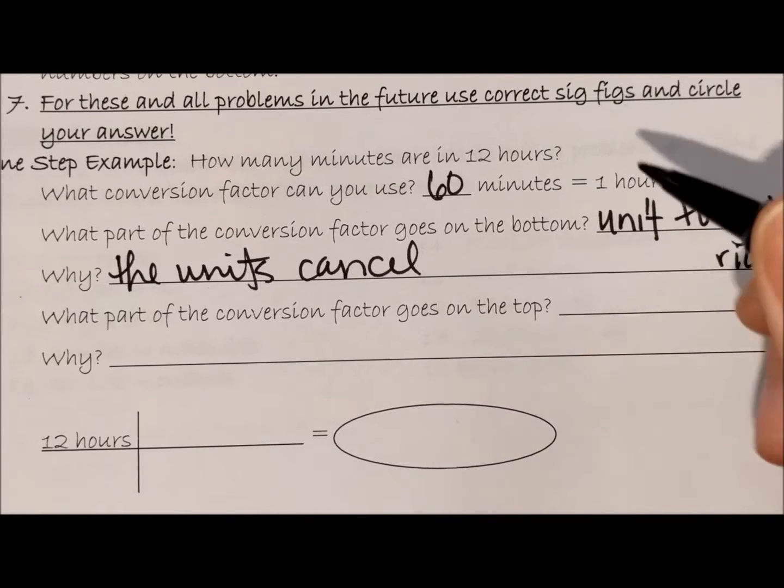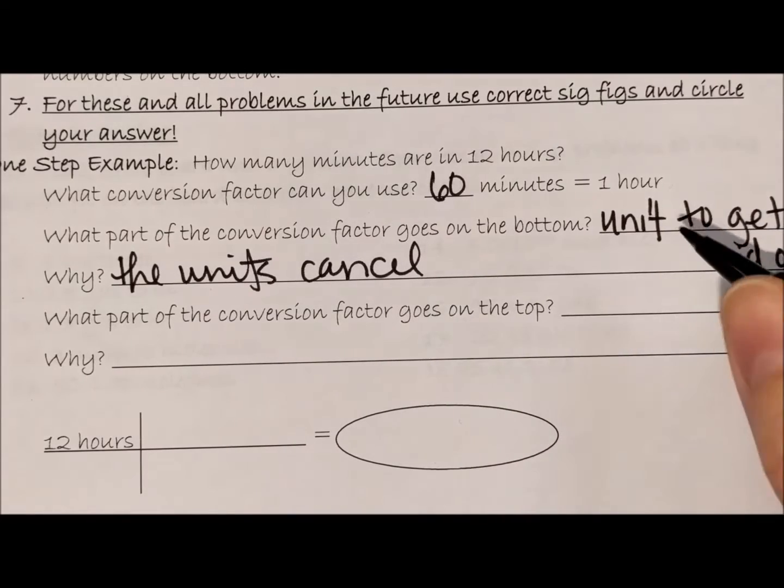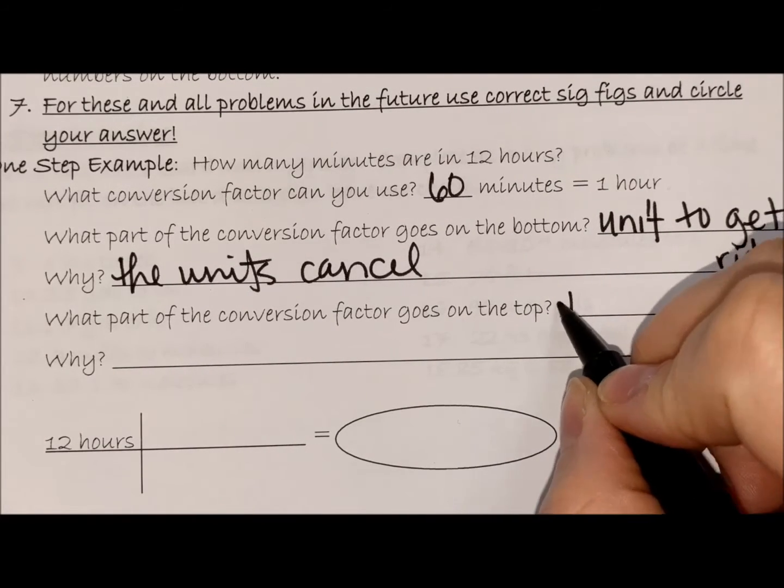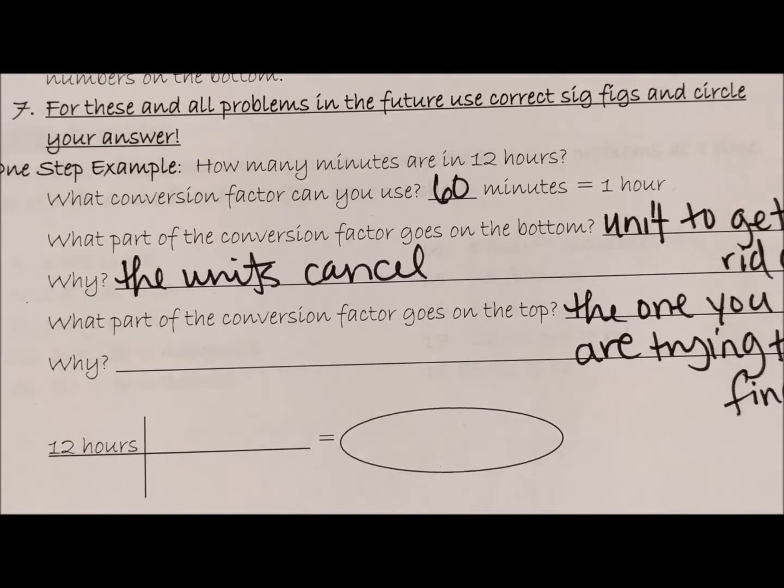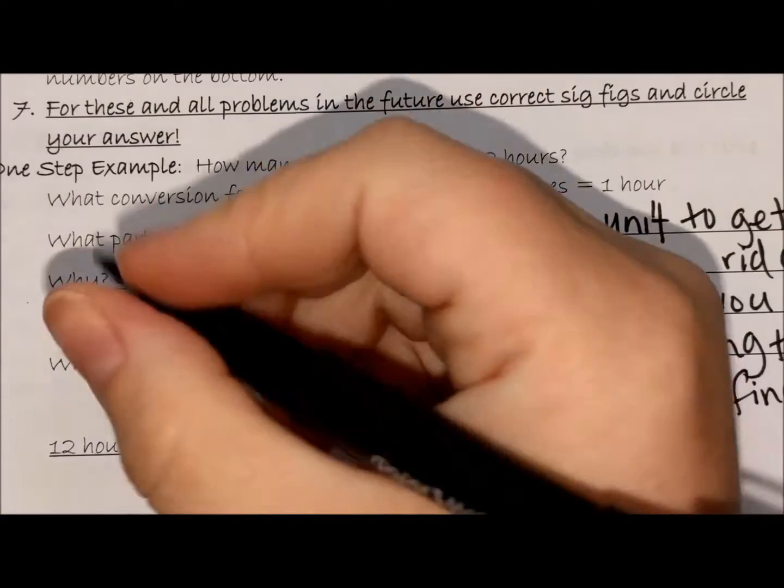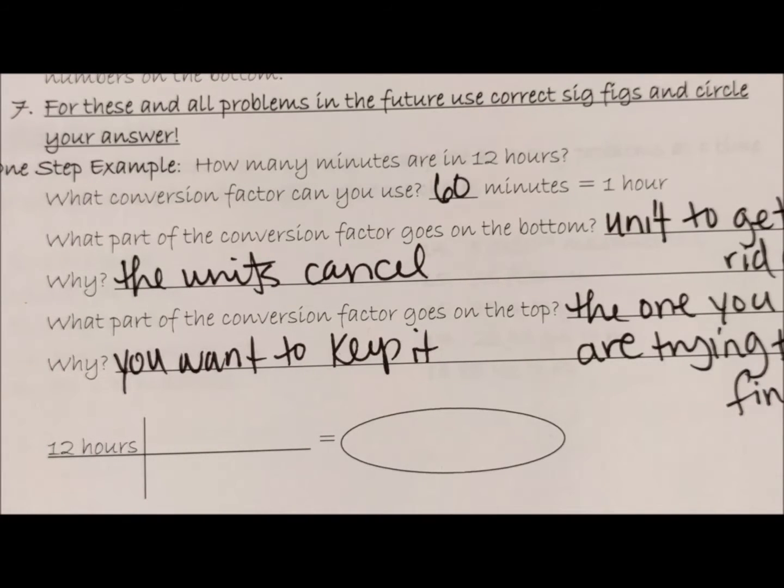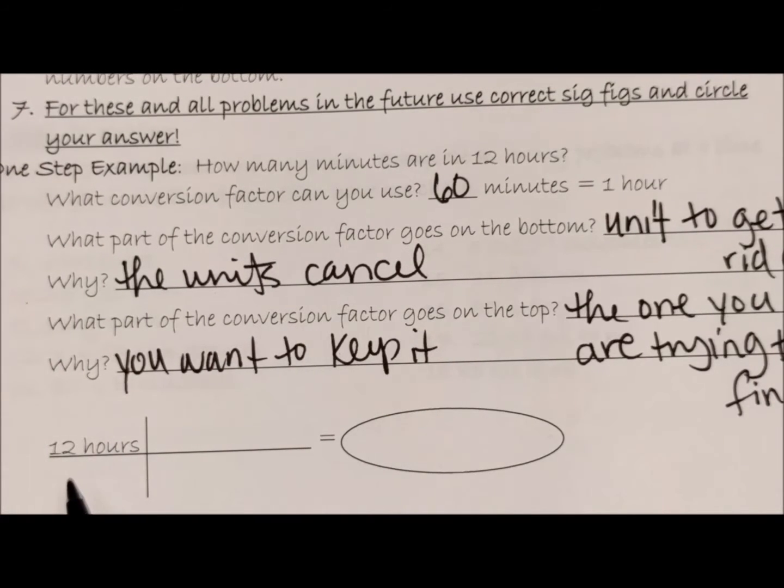Then what part of the conversion factor goes on the top? Well, it's the other part—whatever it's equal to. In other words, the one you're trying to find. The reason why is because you want to keep that one.